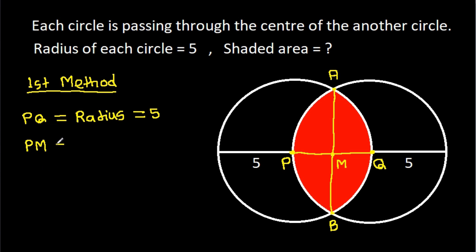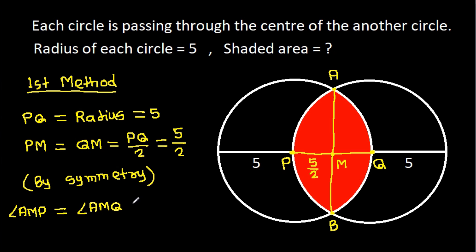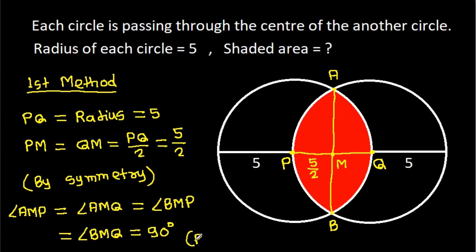Then PM will be equal to QM, that will be PQ divided by 2 by symmetry. And PQ is 5, so PM is 5/2. Also, angle AMP will be equal to angle AMQ, which will be equal to angle BMP — all equal to 90 degrees by symmetry. These angles will be 90 degrees.